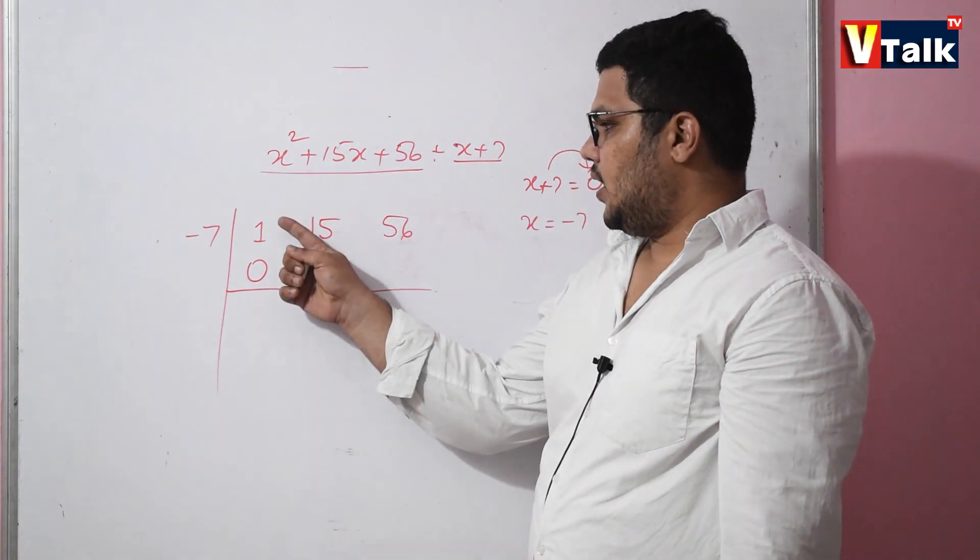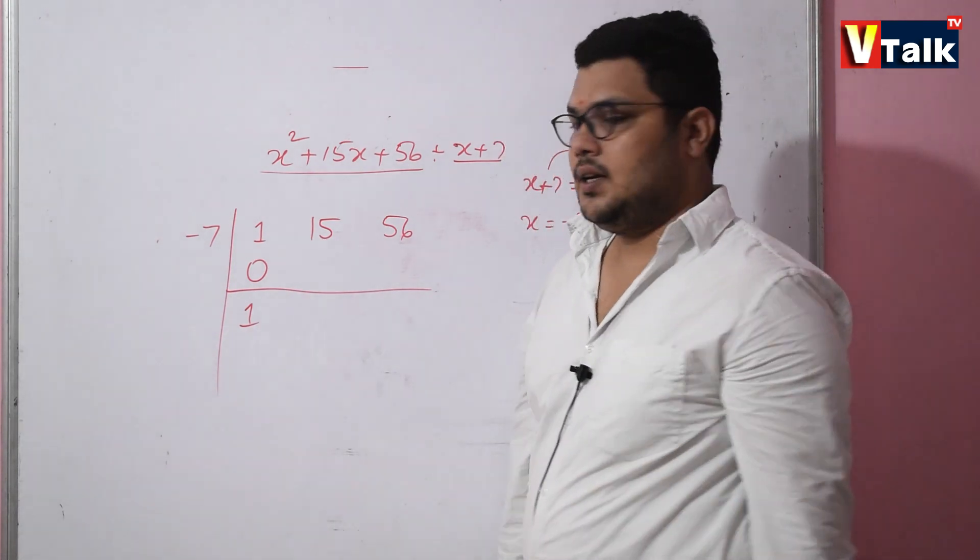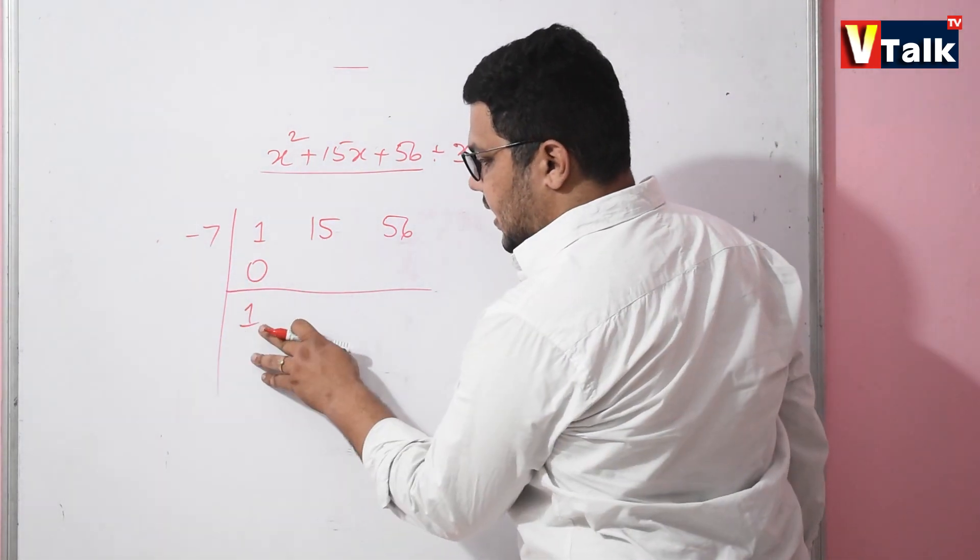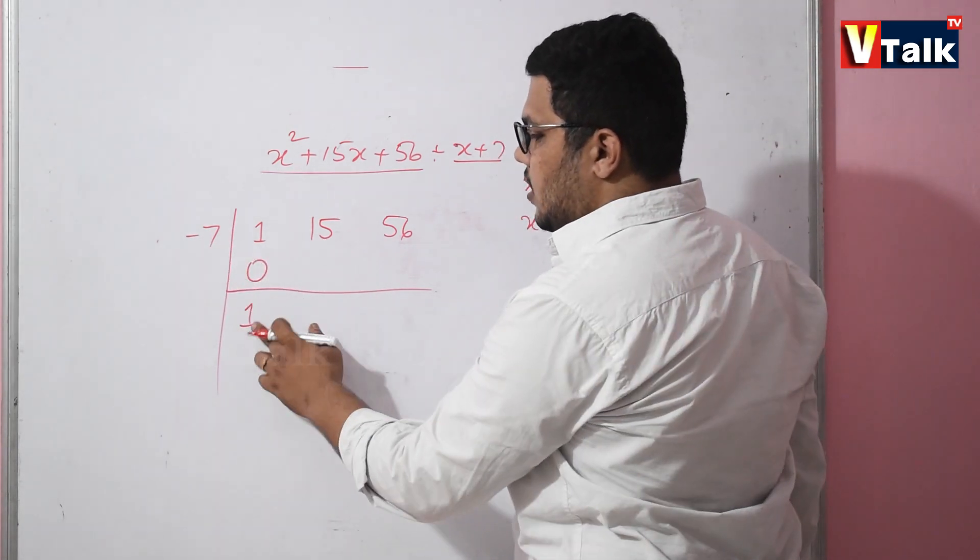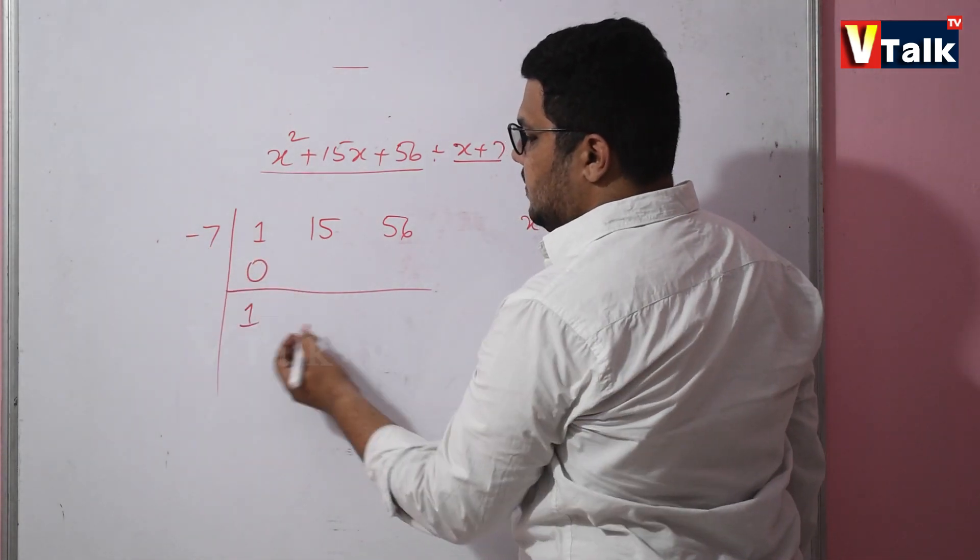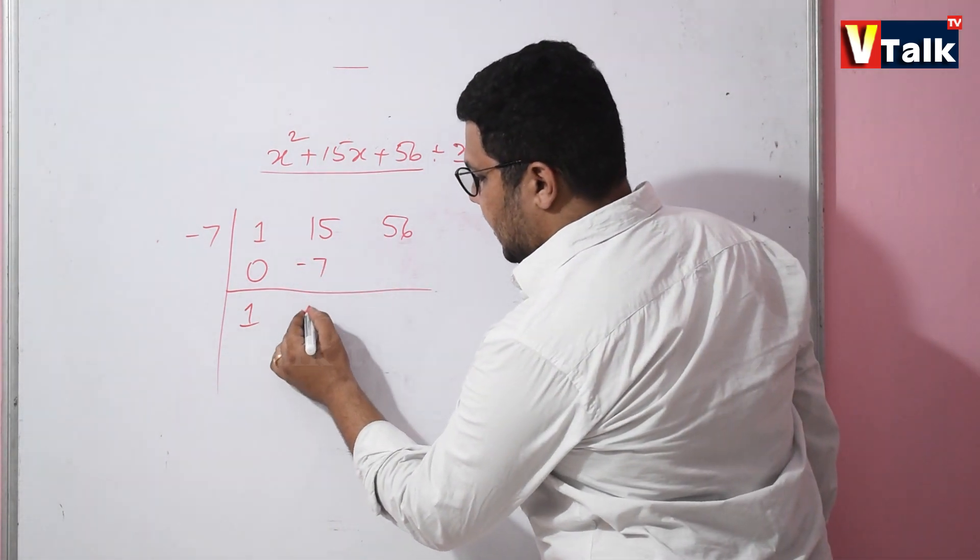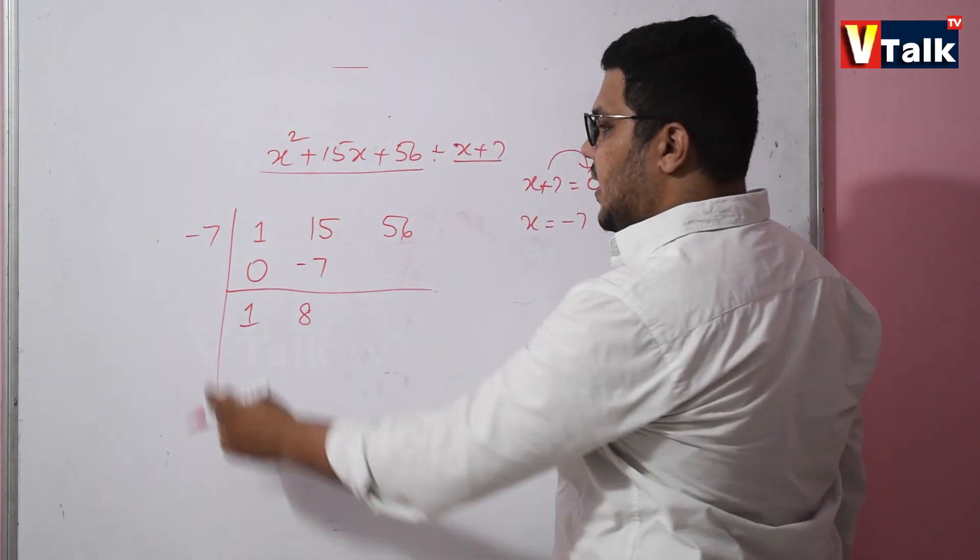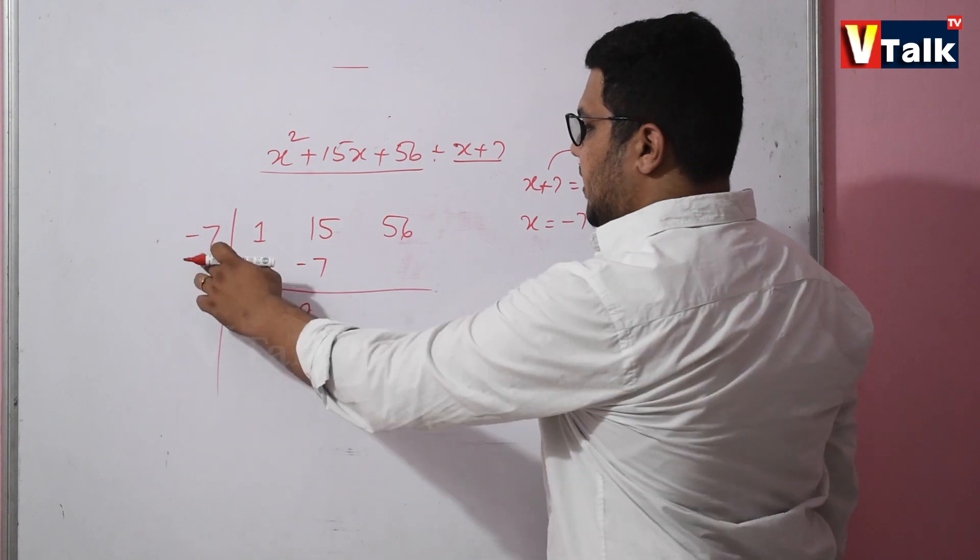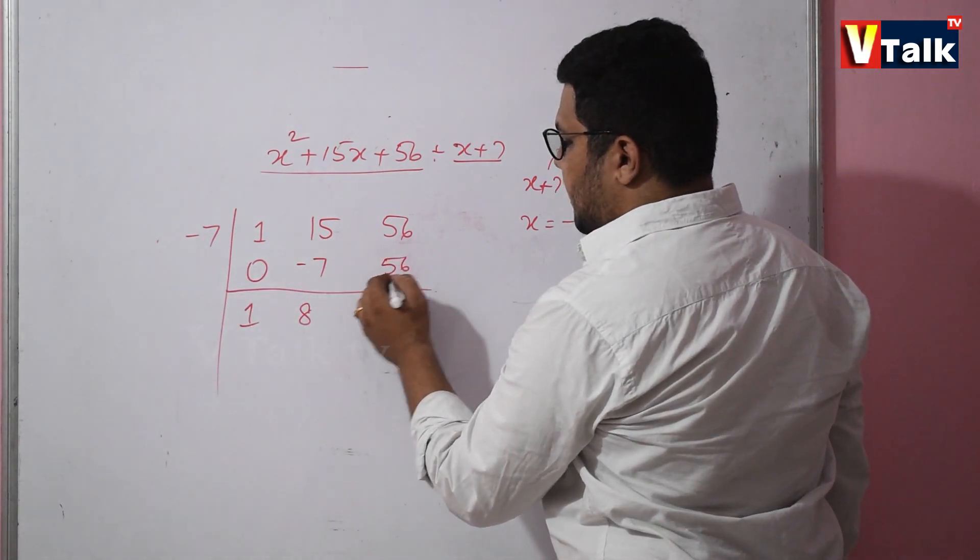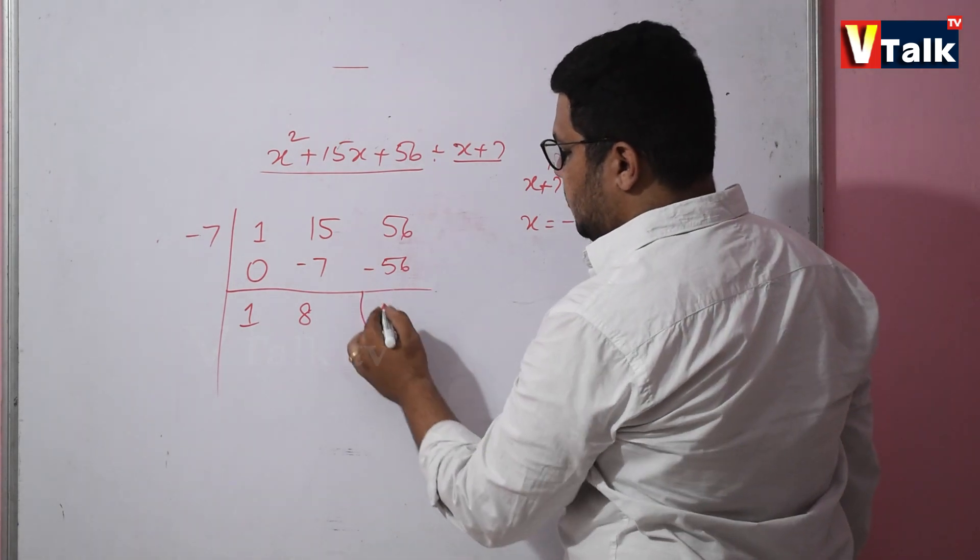Now here minus 7. 1 into minus 7 is minus 7. 15 minus 7 is 8. 8 into minus 7 is minus 56. Here, minus and minus becomes plus. So plus 56 minus 56 equals 0.